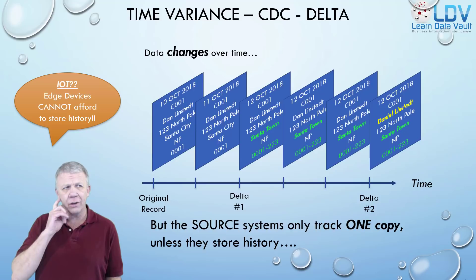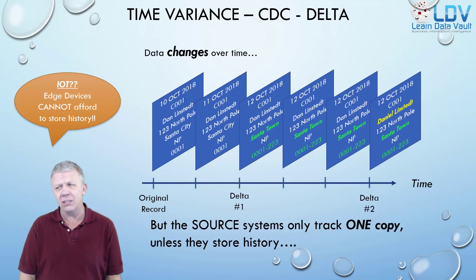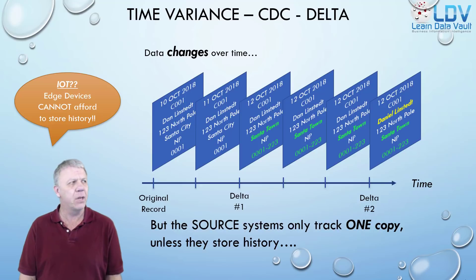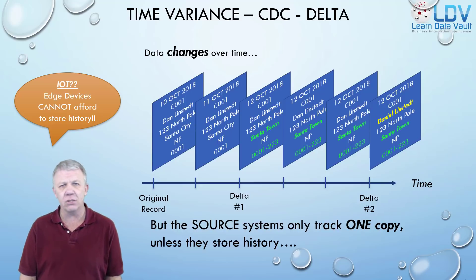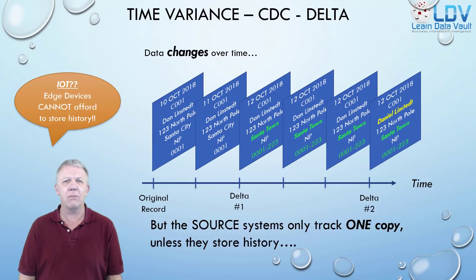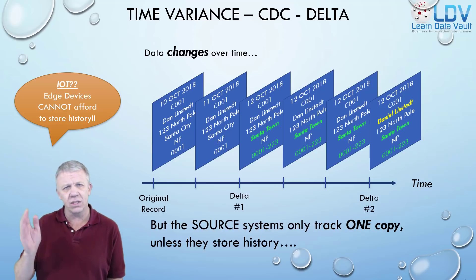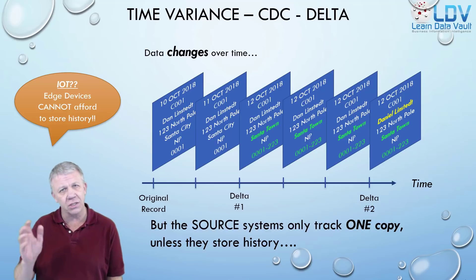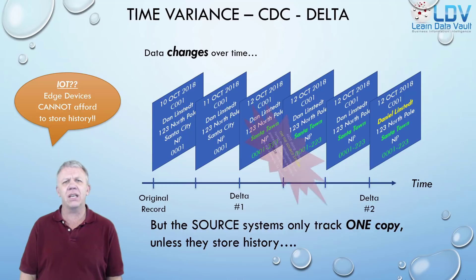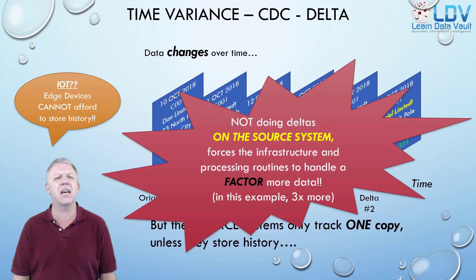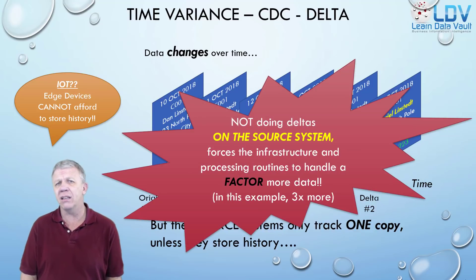Something to note: if you're getting into IoT or machine-generated data, these internet-of-things machines don't keep their data sets, they don't keep history, they can't keep history. They produce heartbeats — the same data sets or signals over time. So understanding where CDC has to occur is absolutely vitally important going forward.